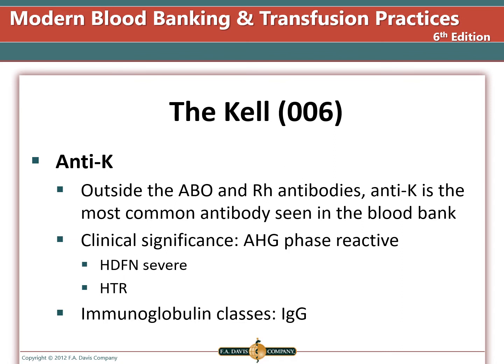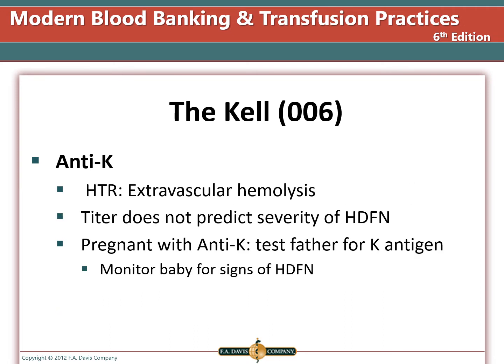Outside of ABO and Rh antibodies, anti-Big K is the most common antibody seen in the blood bank. It reacts in the AHG phase and causes severe hemolytic disease of the fetus and newborn and hemolytic transfusion reactions, as it is IgG and antigens are well developed on fetal cells. Blood selected for transfusion must be K-negative, though compatible units are easy to find. Anti-K can cause extravascular hemolysis. Antibody titer does not predict severity of HDFN for this antibody. If a mother makes anti-Big K, the father can be tested, or amniocentesis can determine if the baby will be affected.